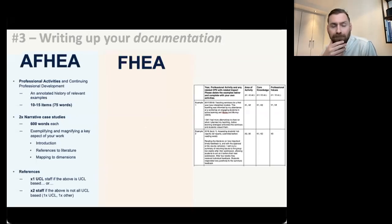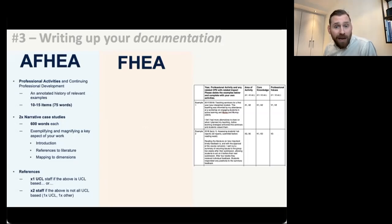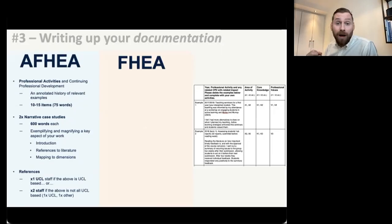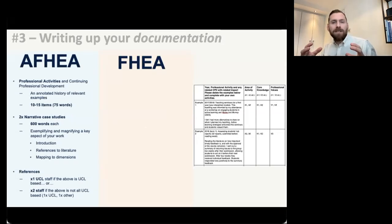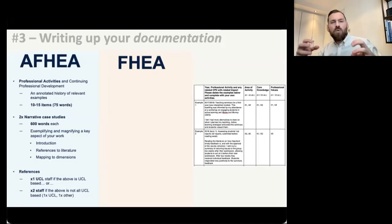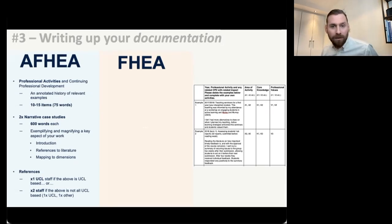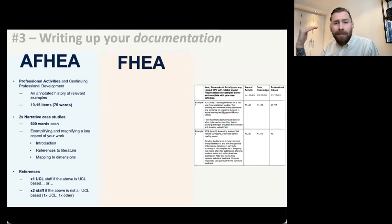They've got 75 words that you can use to explain each item. I recommend everyone begin by listing those dimensions — two of the A's, two of the K's, and the professional values — and start writing everything you possibly can that fits with those. Aim for 20, 30, even 50 different examples, whatever you can. Because then you can pick the most relevant ones. The professional activities is essentially a shop window into you and your experiences, whittled down to the key 10 to 15 elements. The second thing you'll be putting in is two narrative case studies — these are 600 words each.